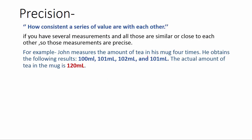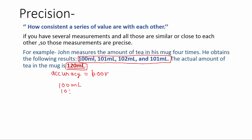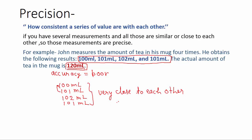For example, John measures the amount of tea in his mug 4 times and gets these 4 results. The actual amount of tea in the mug is 120 ml. All results are very far from 120 ml, so the accuracy of these results is poor. But if you examine the 4 results closely, they are very close to each other — 100, 101, 101, and 102 ml. They are not close to the actual value, but they are close to each other, so their precision is good.